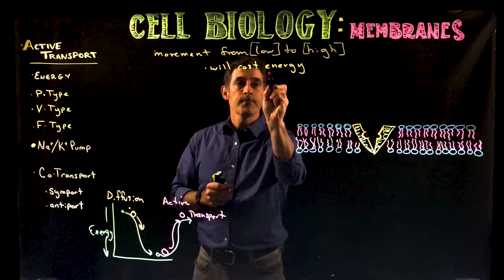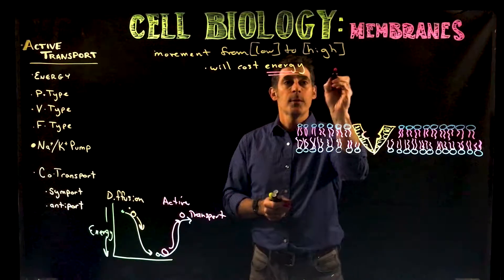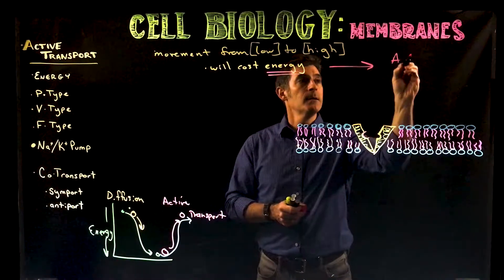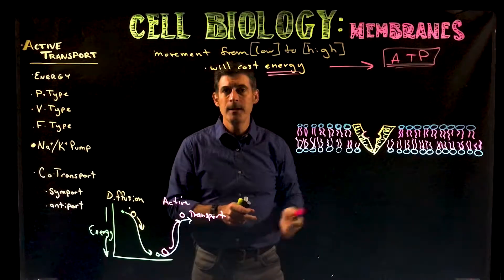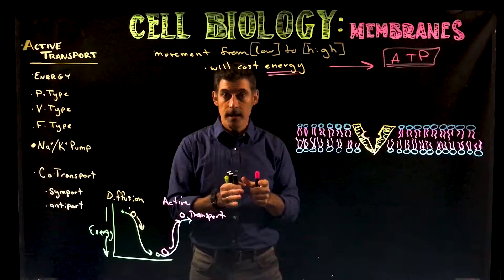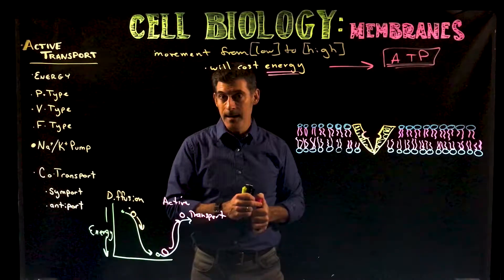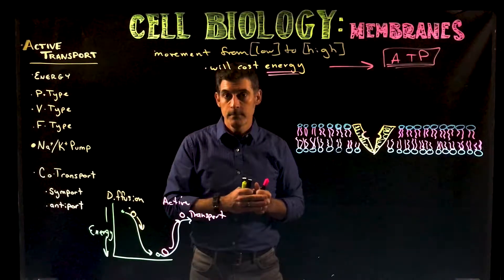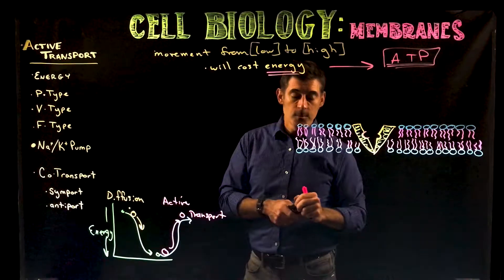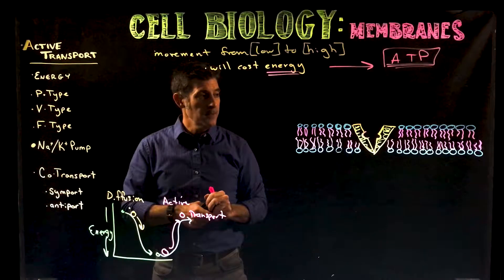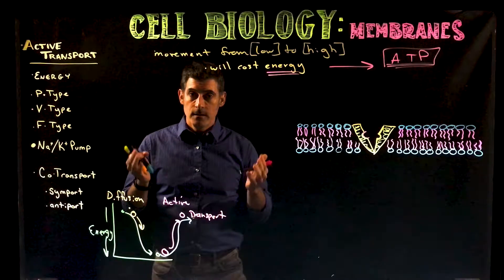So energy has to come from somewhere. One of the primary sources of this energy is ATP — adenosine triphosphate. We're going to get into more detail on the structure of ATP later. If you've already gone through the structure of a nucleotide like the A, T, G, C in DNA and RNA, it's actually pretty much the same structure. The cells are going to use ATP for energy in different ways.